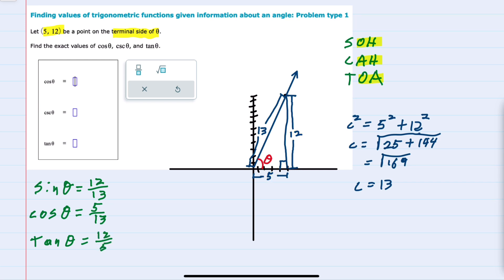From here, I can also identify the other trigonometric functions. The inverse of sine is cosecant, so the cosecant of theta is the reciprocal of 12 over 13, which is 13 over 12.